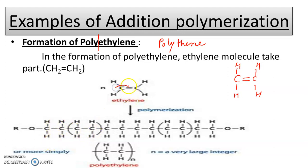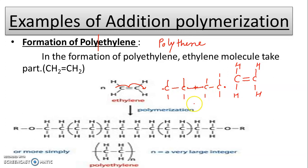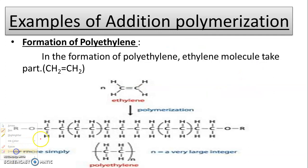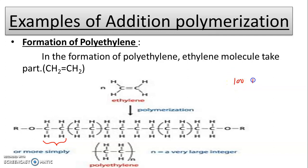In the process, the double bond opens up, free radicals are formed - one electron on each side. These free radicals join together forming a chain. When two are present it is a dimer, then trimer, tetramer, and so on - continuously added. The value n is also called the degree of polymerization; it may be a hundred, a thousand, ten thousand, or even in lakhs.